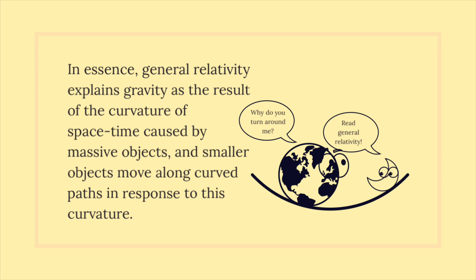In essence, General Relativity explains gravity as the result of the curvature of spacetime caused by massive objects, and smaller objects move along curved paths in response to this curvature.